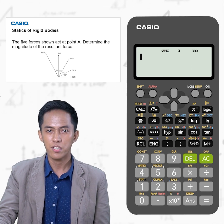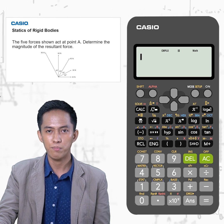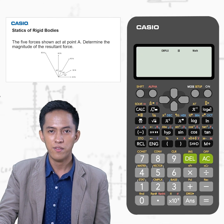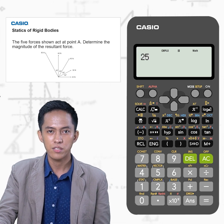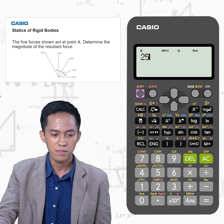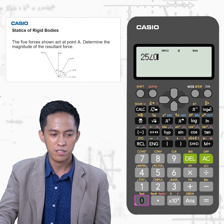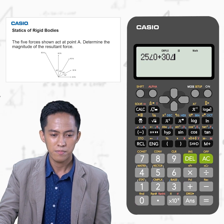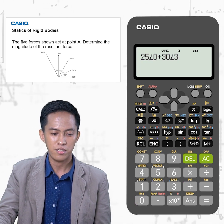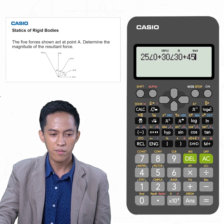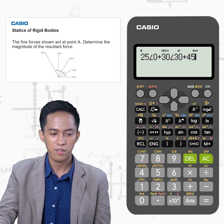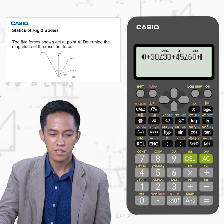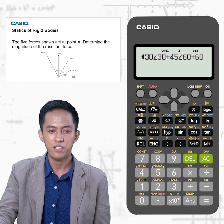The resultant of these forces is equal to the sum of the components of each force. Perform this using the Casio FX 570S Plus. Enter: 25 Shift-Angle 0 degrees, plus 30 Shift-Angle 30 degrees, plus 45 Shift-Angle 60 degrees, plus 60 Shift-Angle 90 degrees.